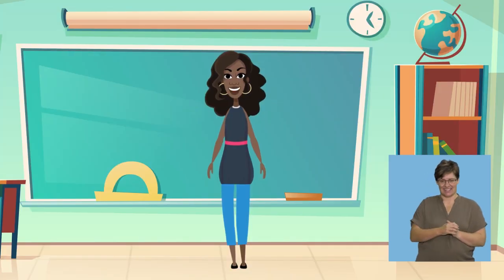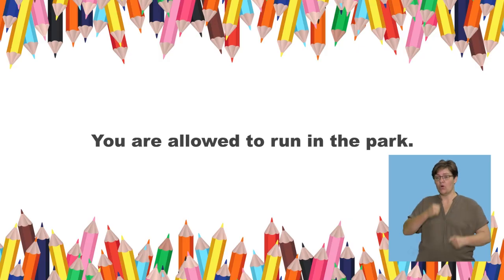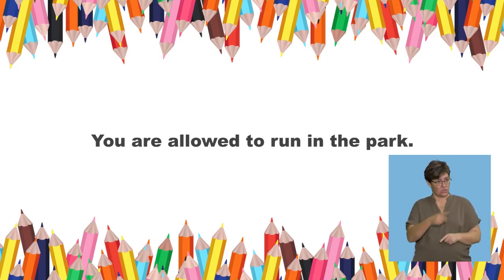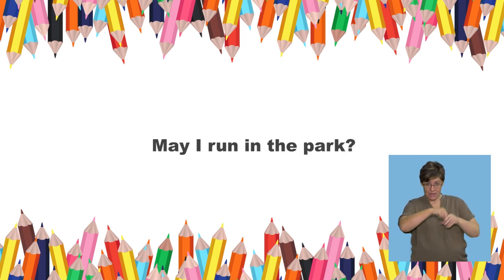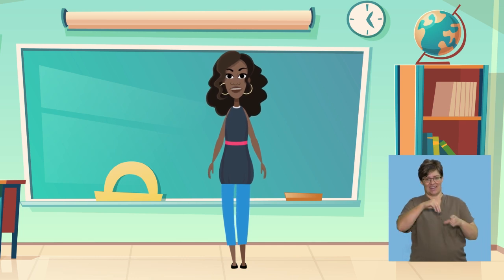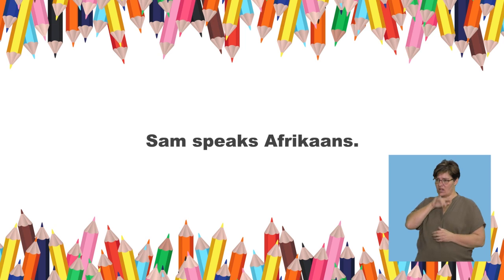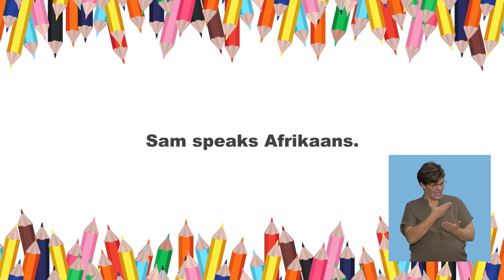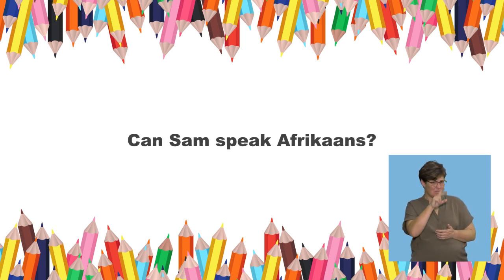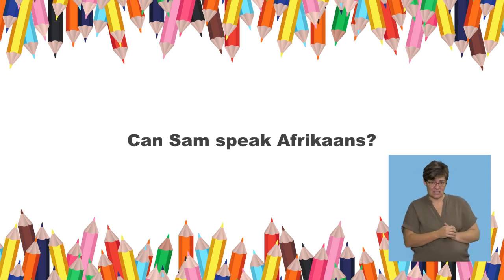Listen to the next sentence: You are allowed to run in the park. You say: May I run in the park? Good work. May I run in the park? Listen: Sam speaks Afrikaans. You say: Can Sam speak Afrikaans? Can Sam speak Afrikaans? He sure can.